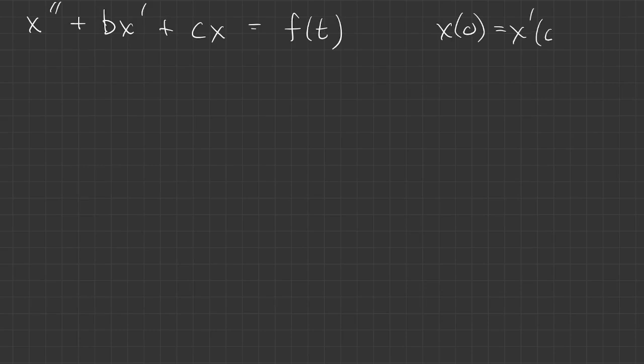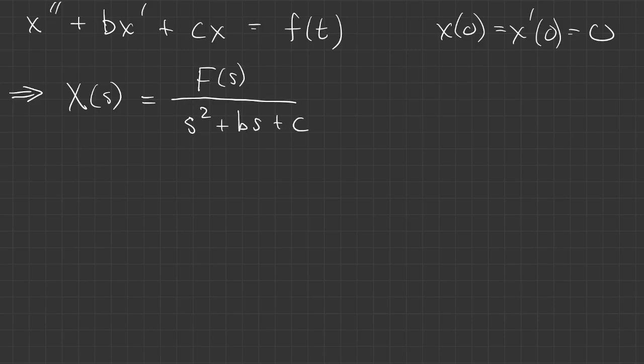So why does this matter? Here's our second order linear problem with constant coefficients. We're going to assume zero initial conditions throughout all of this. So when we solve for the transform of the solution, we get capital F divided by the characteristic polynomial. And we can write this as capital F times capital G of s. g is what we call the transfer function.